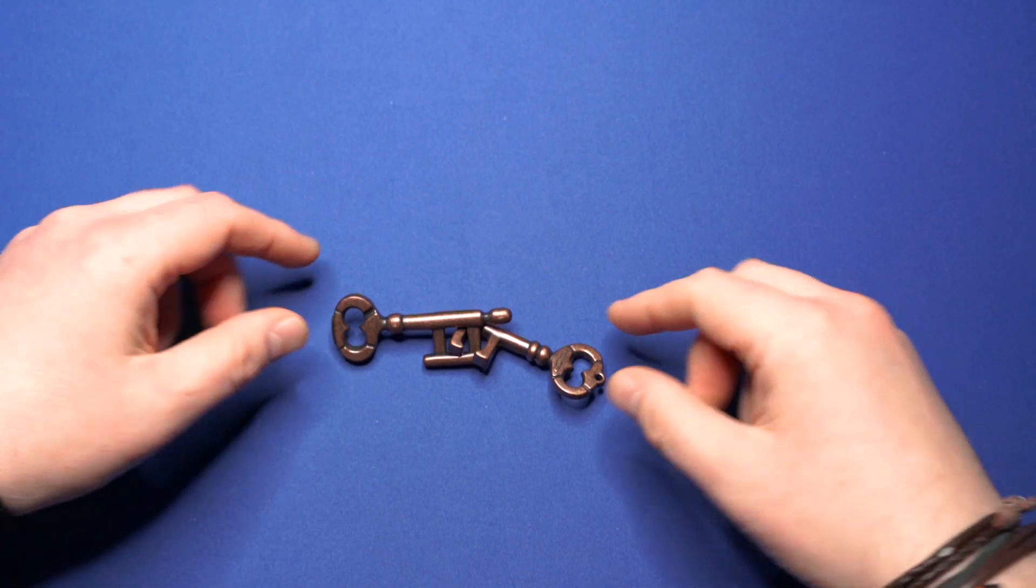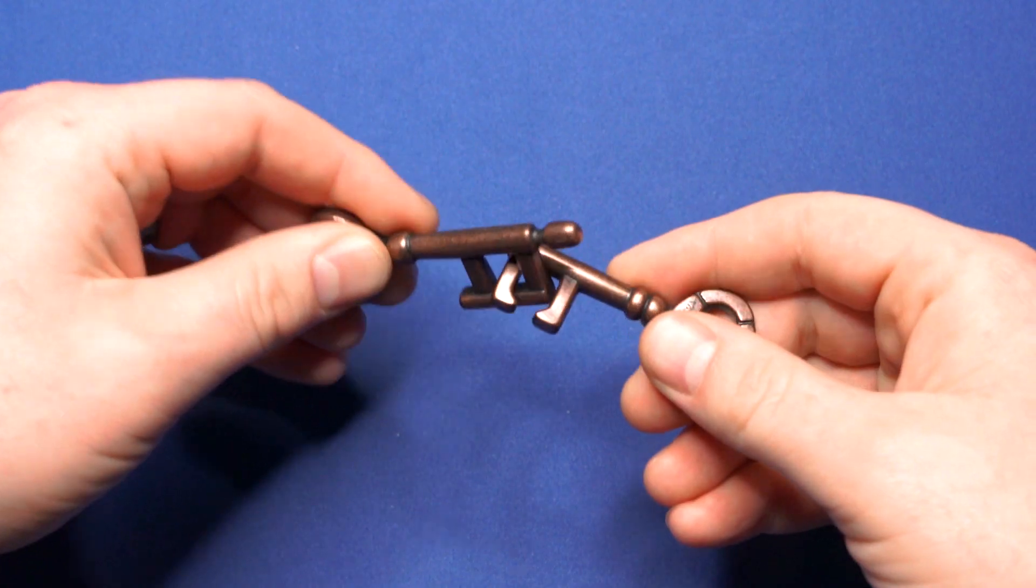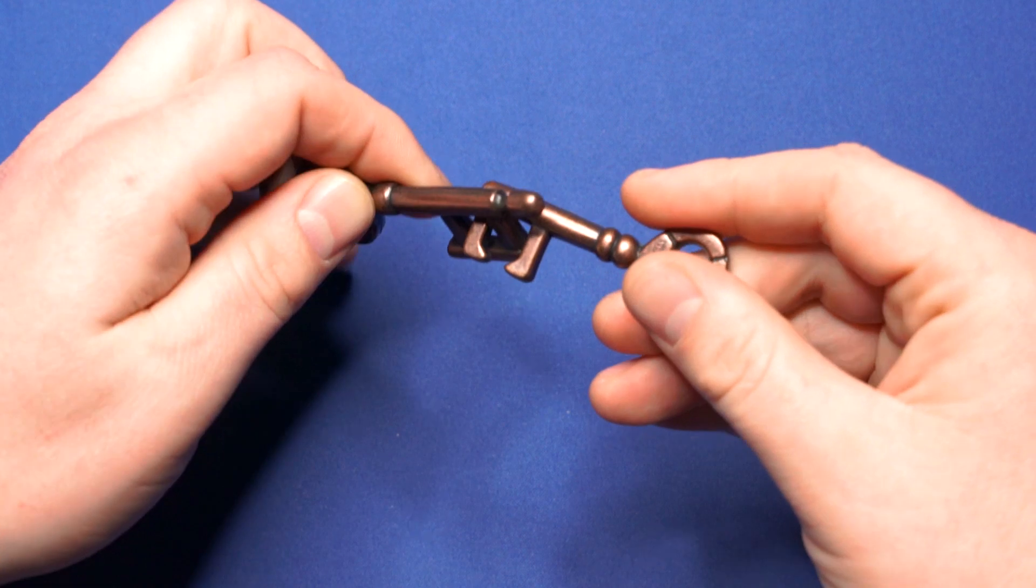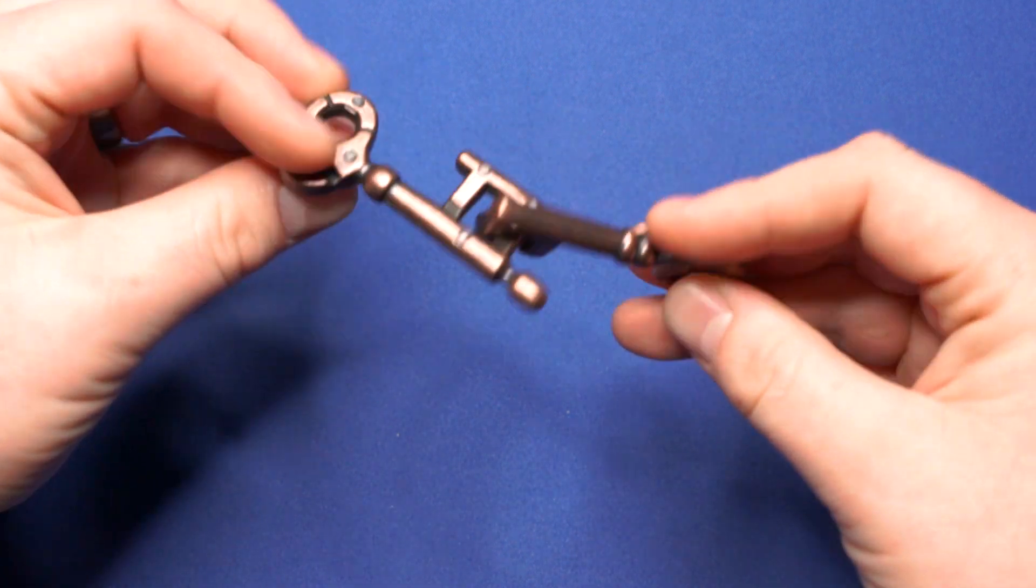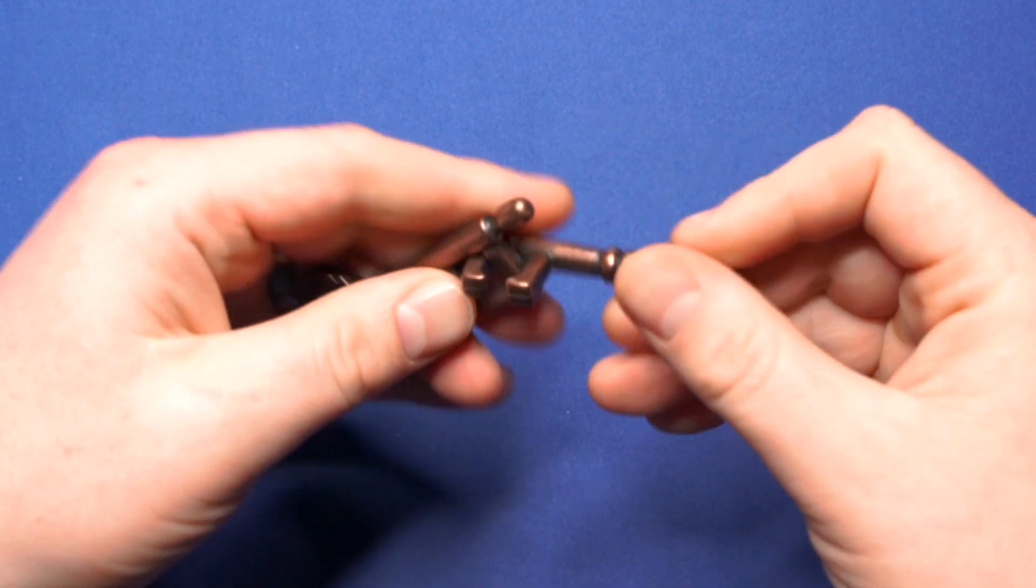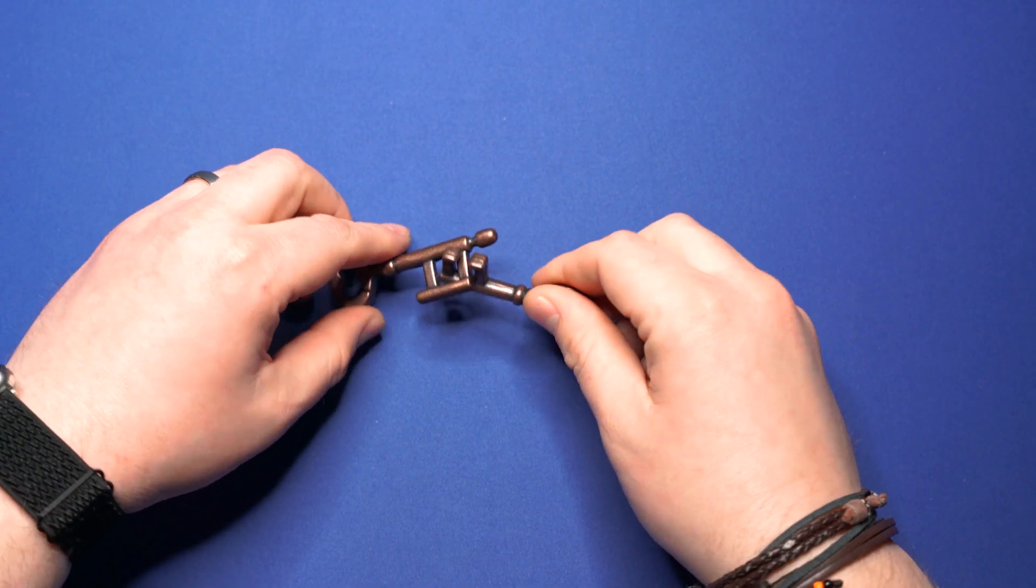Okay, so here is the Key Puzzle outside of the box. You can see it consists of two solid brass looking keys. One has the Hanayama logo on it. And yeah, that's all there is to it. Just two keys.